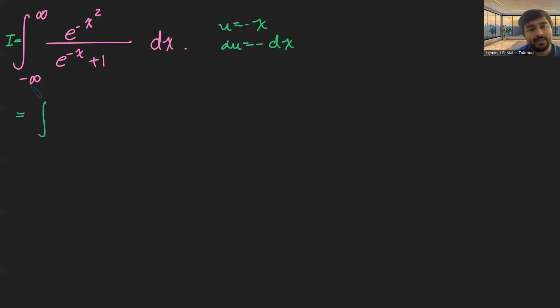Well, the bottom limit, the lower limit, when x is minus infinity, u will be positive infinity. And when x is positive infinity, u will be minus infinity.